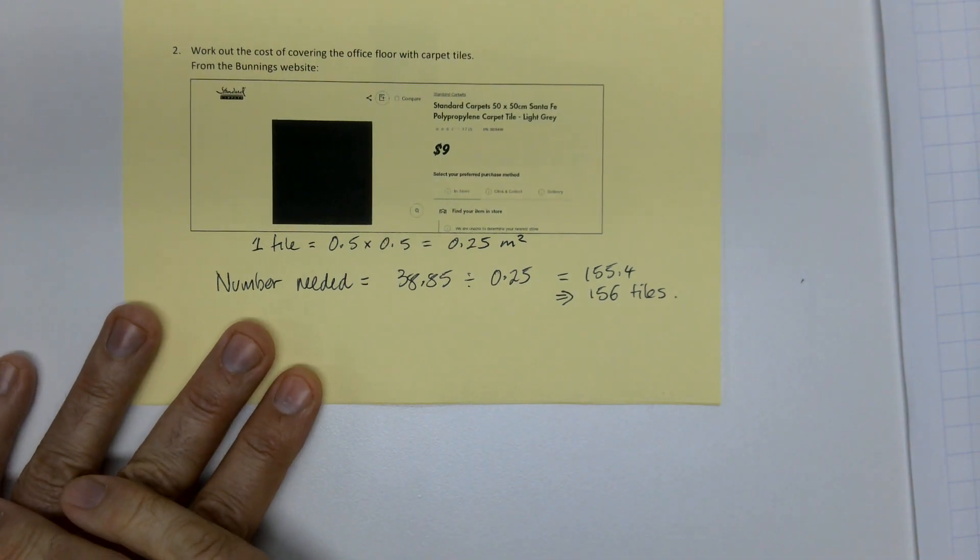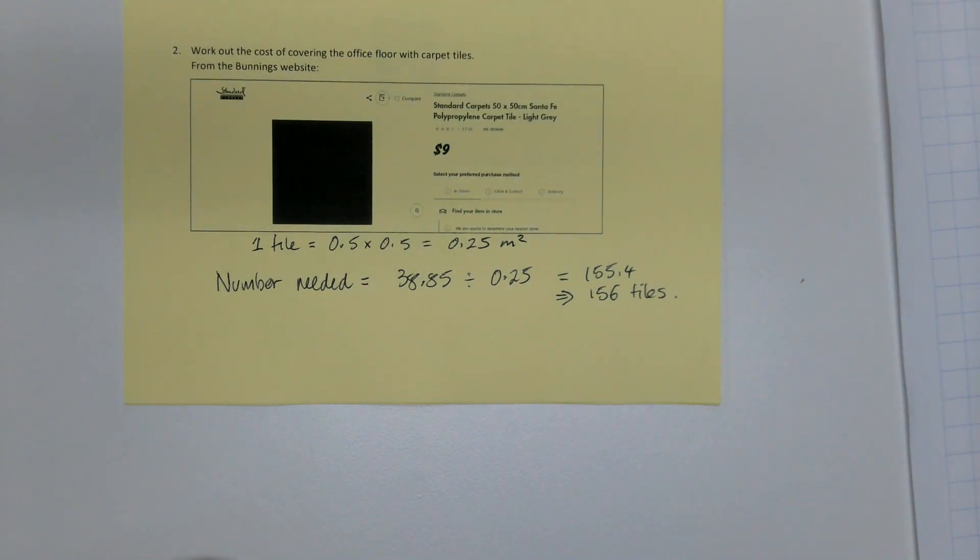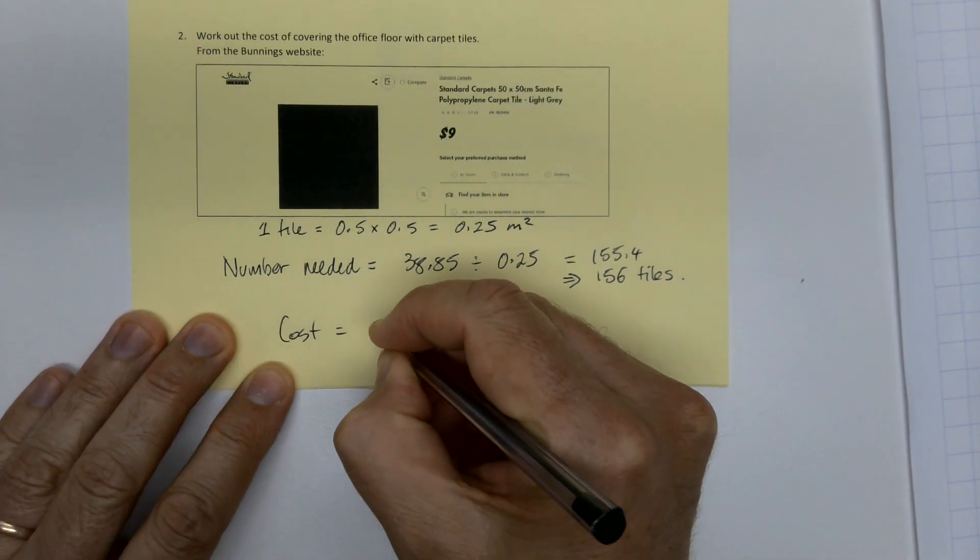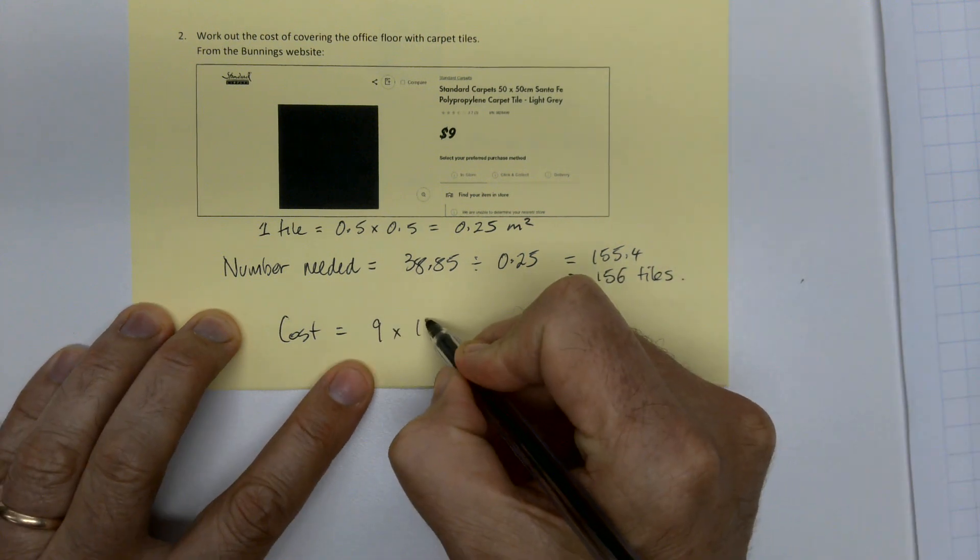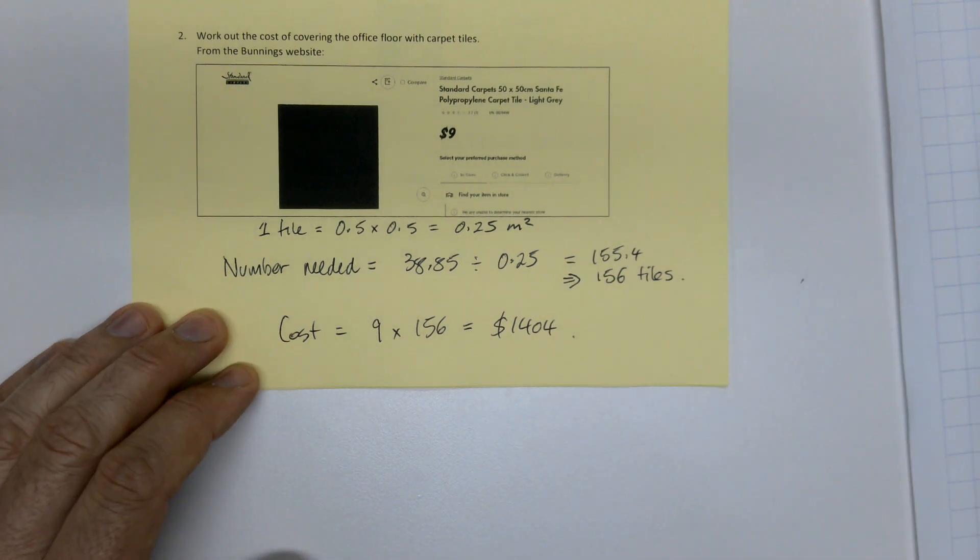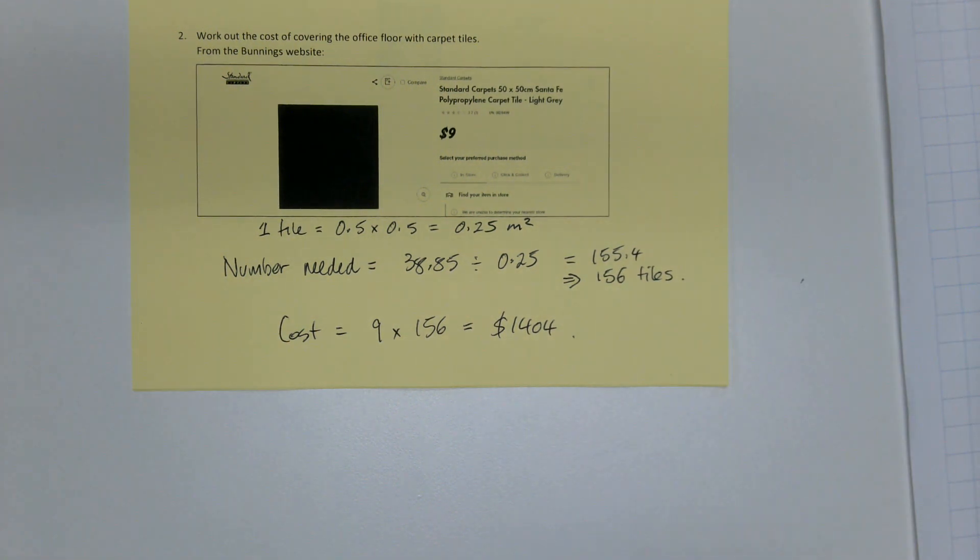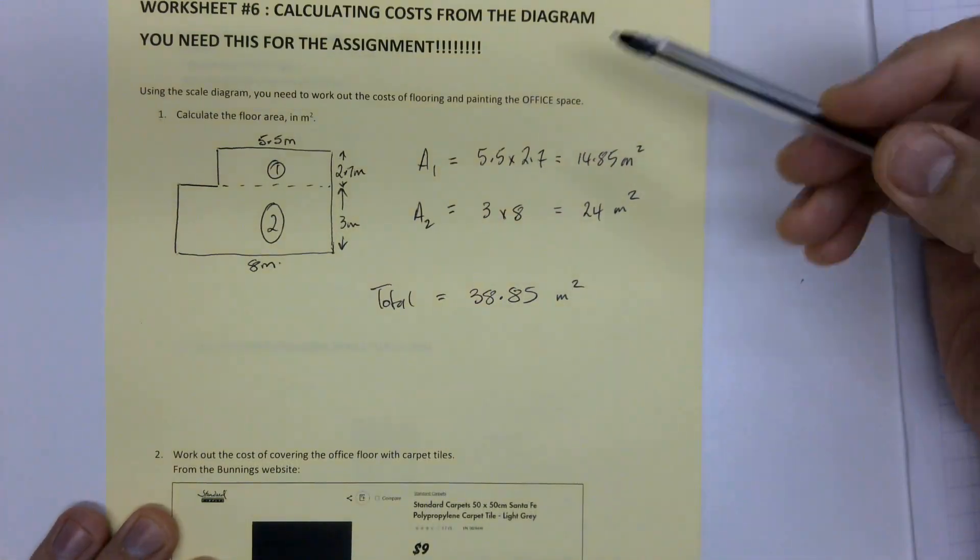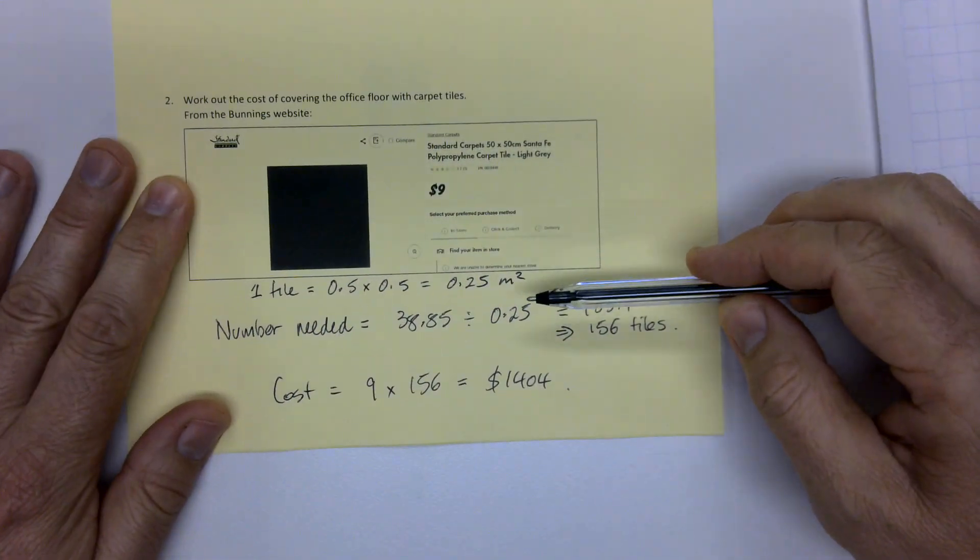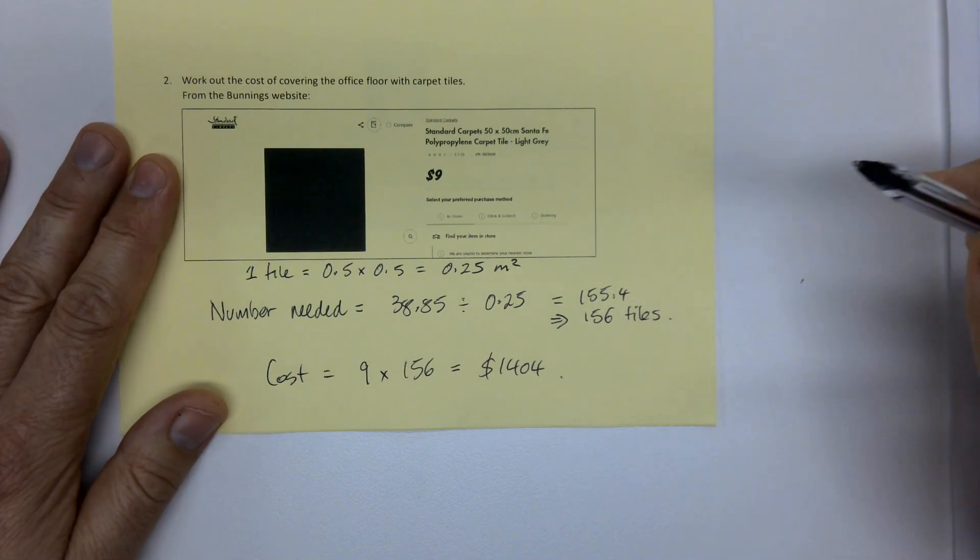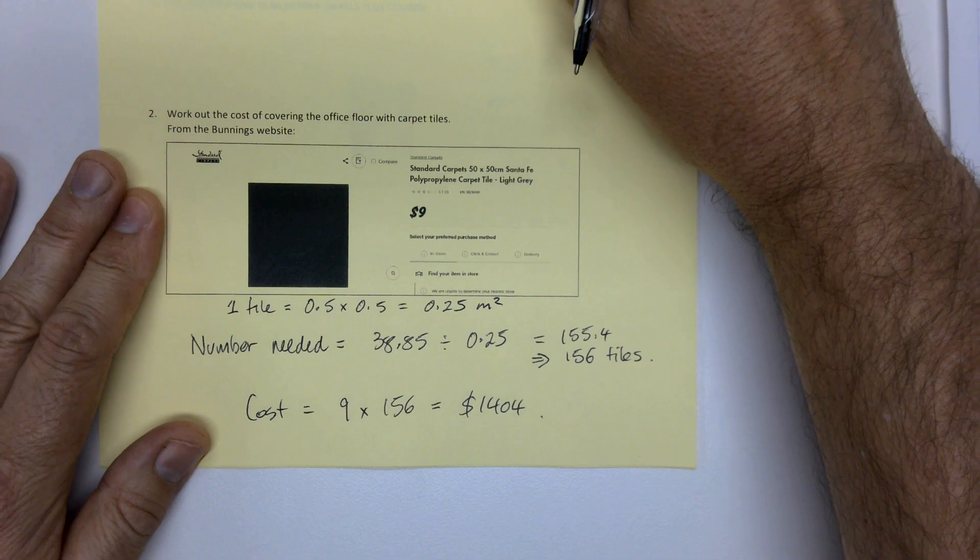And that's not cost. That's how many I've got to walk into Bunnings and order. And that is going to cost me $9 each. So cost is nine times 156, which is 1,404. So that's how much the flooring is going to cost. So we started off getting the area, then the area of one tile, the number needed, and then the cost per tile. So that's the flooring.